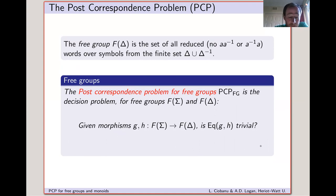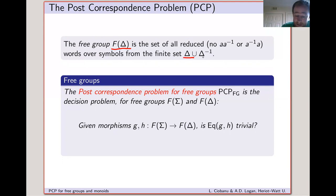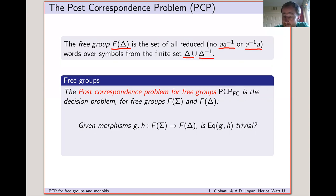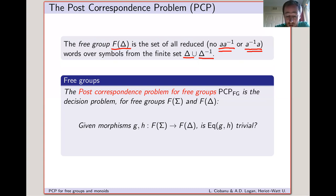We can generalize this problem to free groups. The free group F of delta on the alphabet delta is the set of all reduced words over the alphabet delta and delta-inverse. By a reduced word, I mean a word which contains no subword A·A-inverse and no subword A-inverse·A, where A is contained in delta and A-inverse is its formal inverse. Our product here is concatenation, just like in the free monoid setting, but in addition we do free reduction — we iteratively remove these illegal subwords.